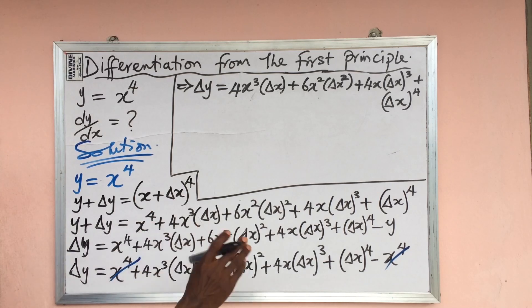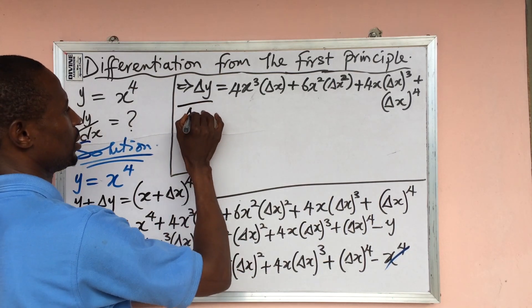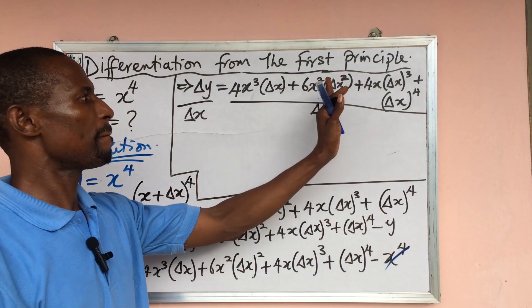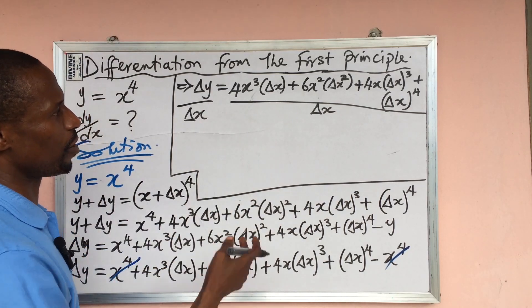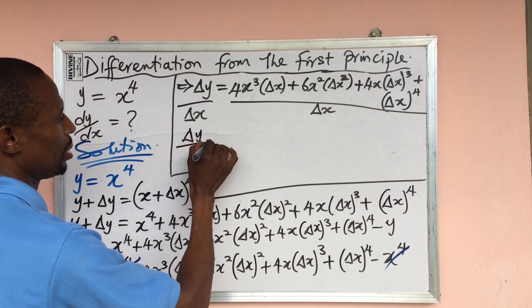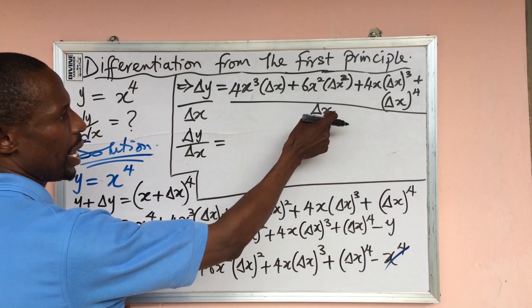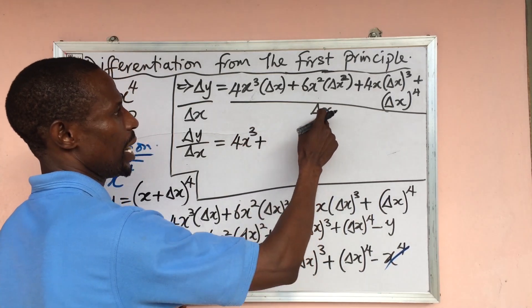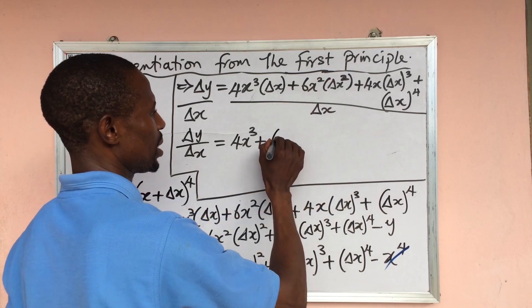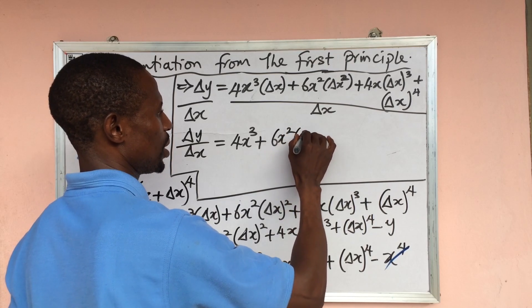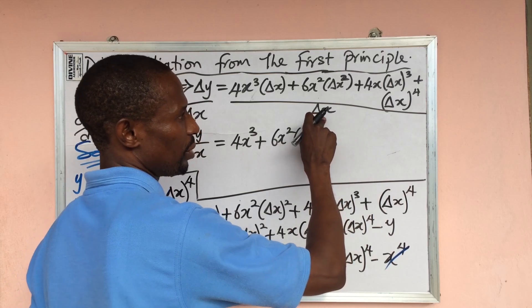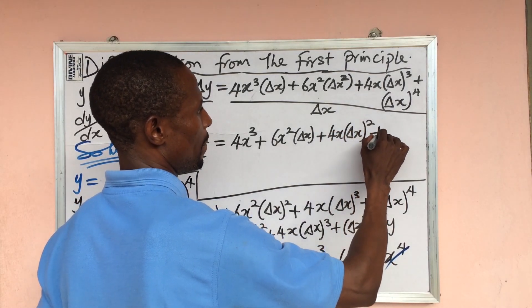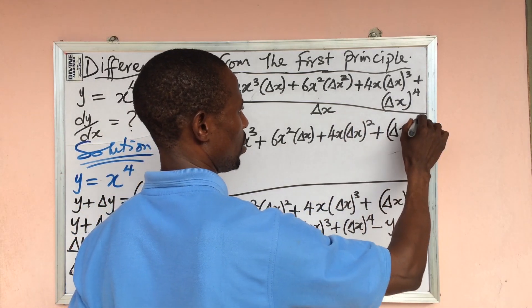So what we do here is divide both sides by δx. If we divide each term by δx, we get: δy/δx equals 4x³ plus 6x²(δx) plus 4x(δx)² plus (δx)³.